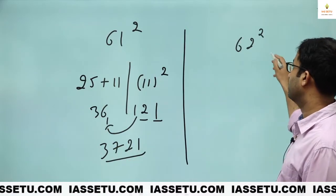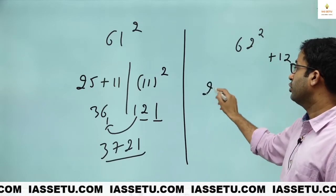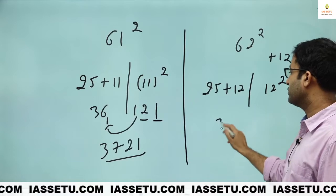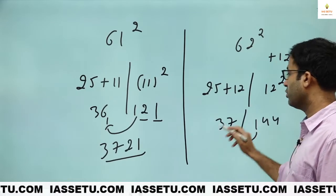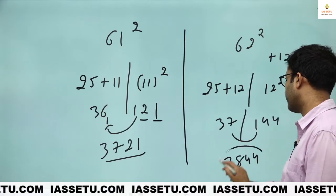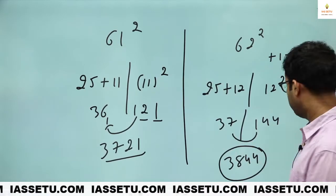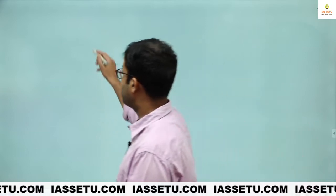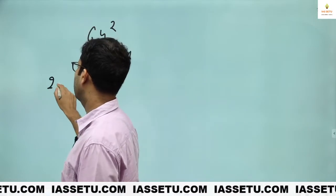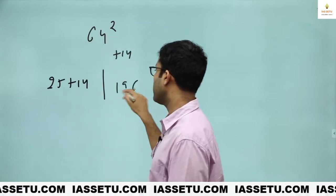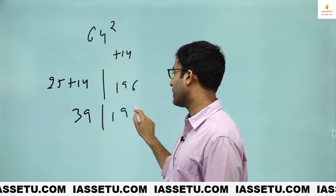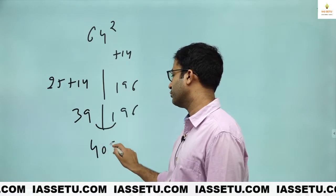Like 62 square. This is plus 12. 25 plus 12. This is 12 square. This is 37. This is 144. 1 carry forward. So this is 3844. 64 square. Plus 14. 25 plus 14. 14 square is 196. So this is 39. 1 carry forward. 4096.